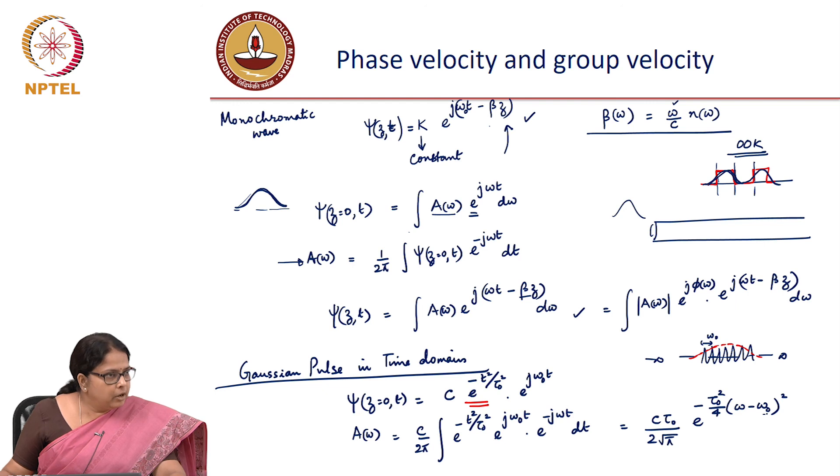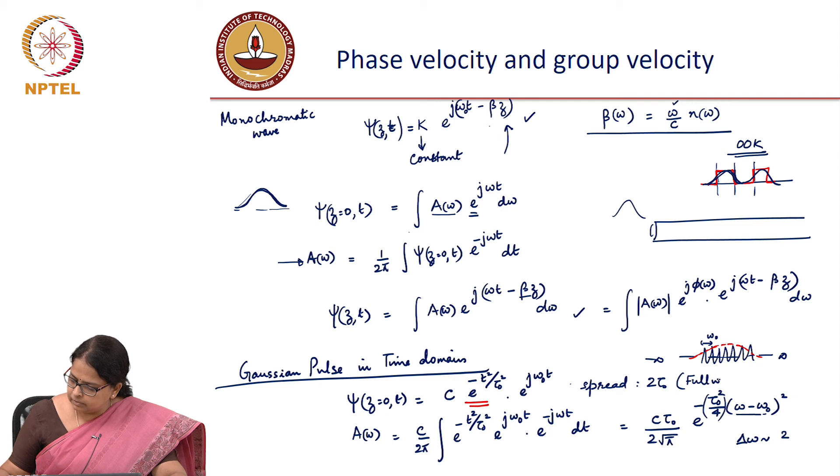So your observation is that the center frequency is omega naught, but around the omega naught you have a spread and the spread is given by this tau naught square by 4. Or what exactly would be the spread? Your spread would be 1 by e spread if you were to calculate or 1 by e square spread if you were to calculate. Here the spread was, in the time domain the spread is 2 tau naught. When I say spread, it means full width at 1 by e maximum, at 1 by e of the maximum, that is 2 tau naught. Whereas here delta omega would be, what should this be? Instead of tau naught, instead of 1 by tau naught square, I got 4 by tau naught square or in the denominator I had tau naught square, this is 4 by 2. So this should be 2 by tau naught.